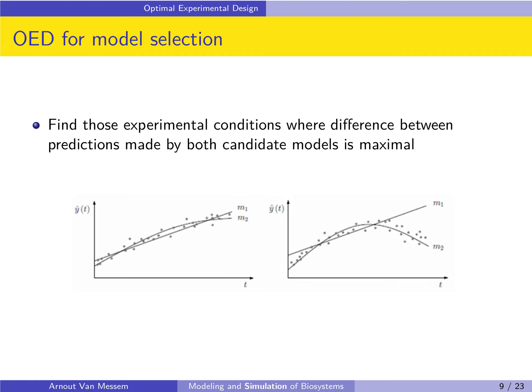Let us start by looking at optimal experimental design for model selection. In the case of model selection, we want to find the experimental conditions for which the difference between the predictions made by both candidate models is maximal.